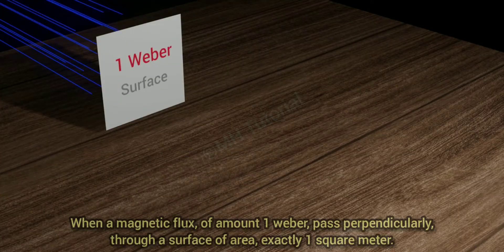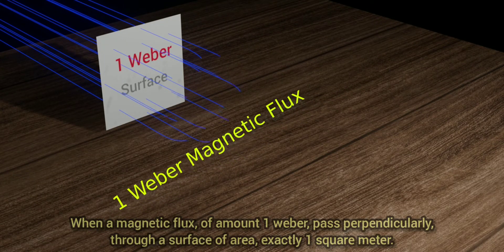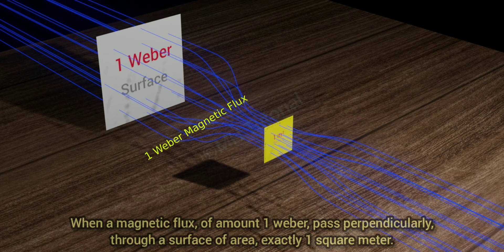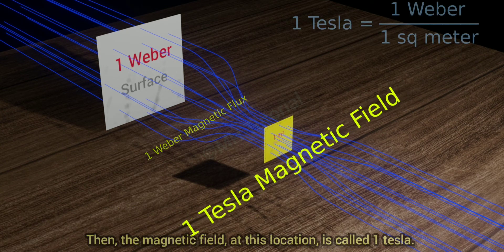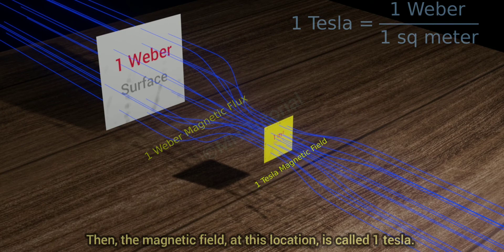When a magnetic flux of amount one Weber passes perpendicularly through a surface of area exactly one square meter, then the magnetic field at this location is called one Tesla.